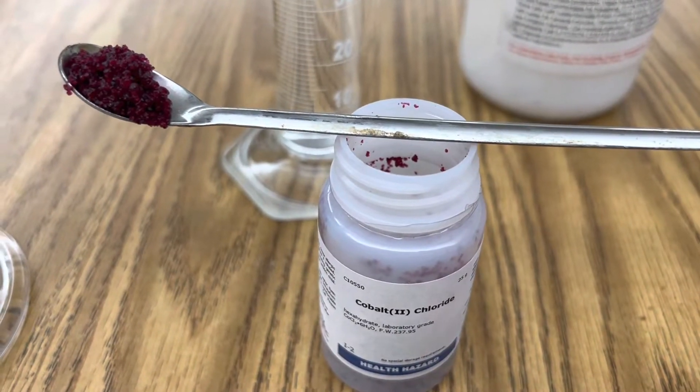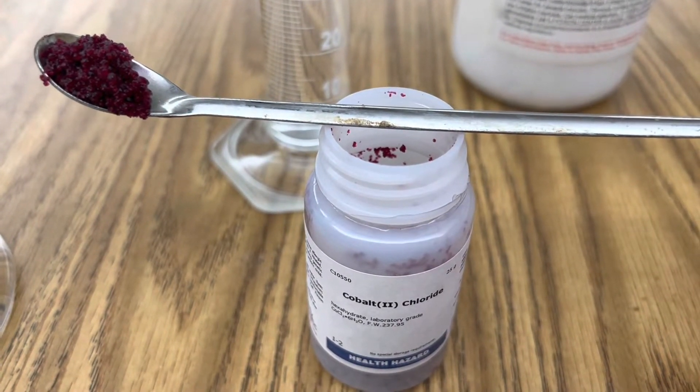Next, create an aqueous solution of 4 grams of cobalt chloride in 80 milliliters of distilled water.